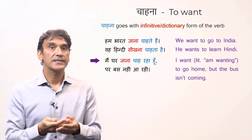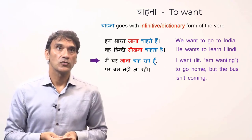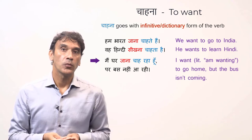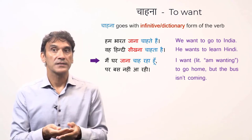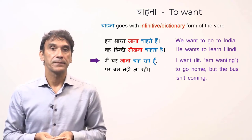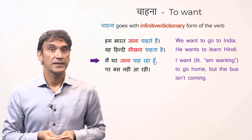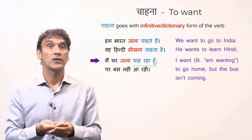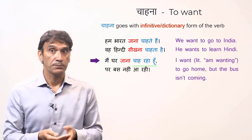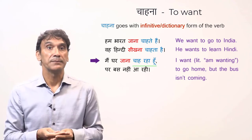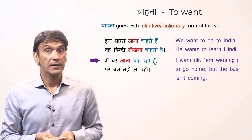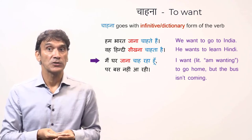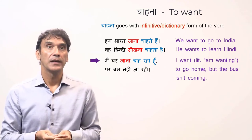The last example: I want to go home, but the bus is not coming. Here the model verb chahana is in continuous form — chahata hai. It literally means 'I am wanting to go home,' which translates as 'I want to go home.'